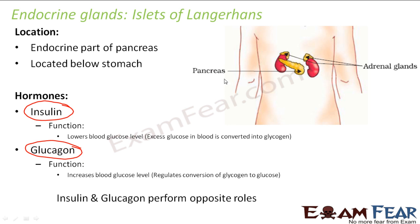Glycogen is a polysaccharide — a multi-branched polysaccharide of glucose, meaning it is a complex form of glucose. When glucose is converted to glycogen, energy is not lost from the body; only the form in which it is stored changes — from glucose to glycogen. As a result, the amount of glucose in the blood reduces, but the energy is stored as glycogen in muscles or other organs, and can be retrieved whenever the cell needs it.